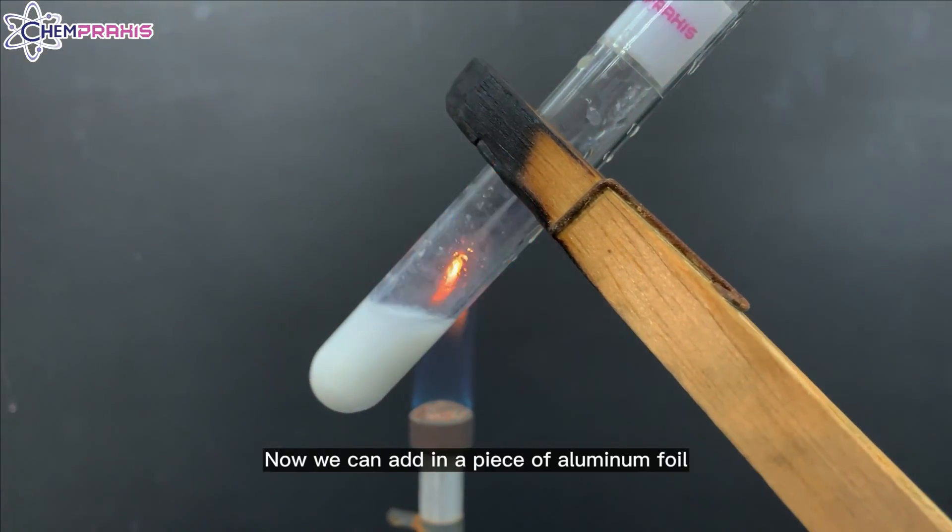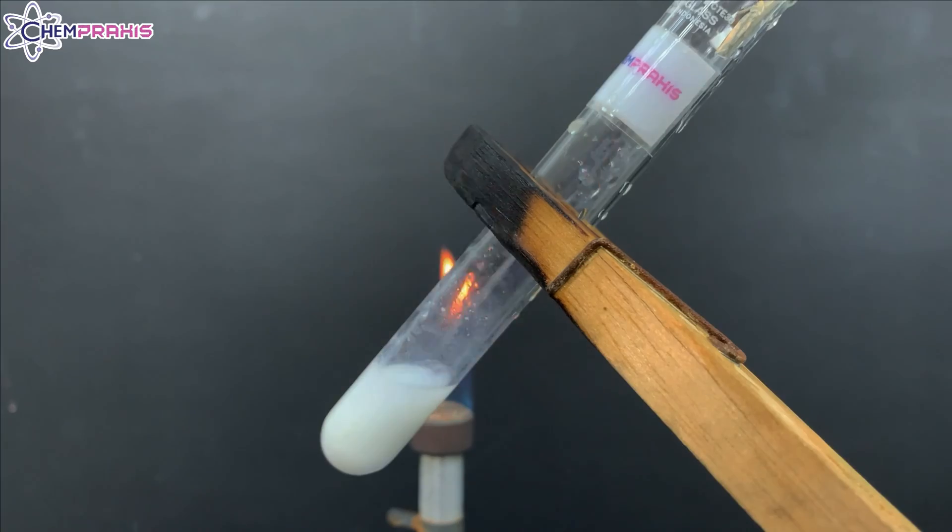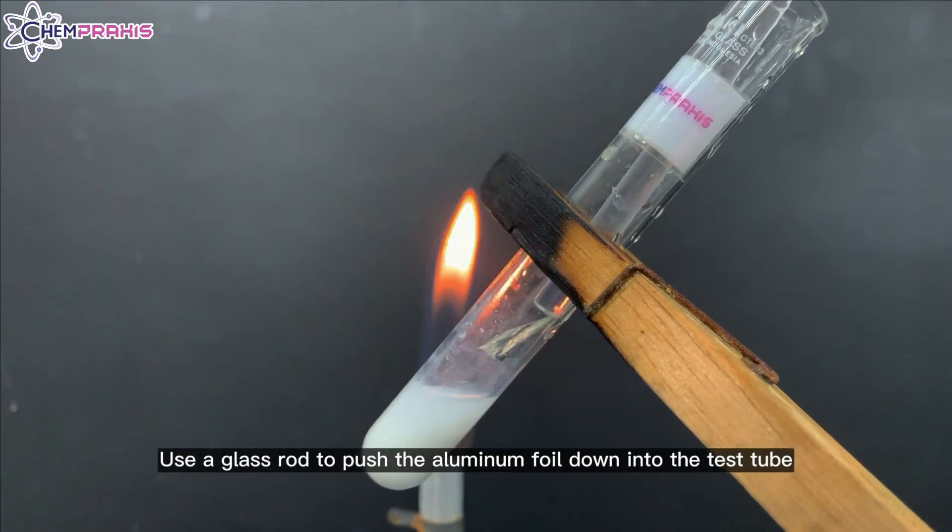Now we can add in a piece of aluminium foil. Use a glass rod to push the aluminium foil down into the test tube.